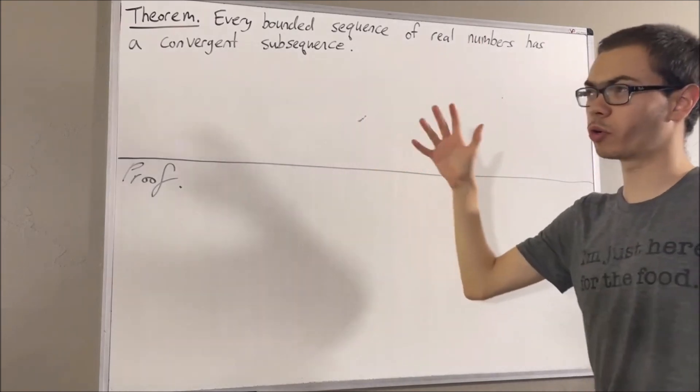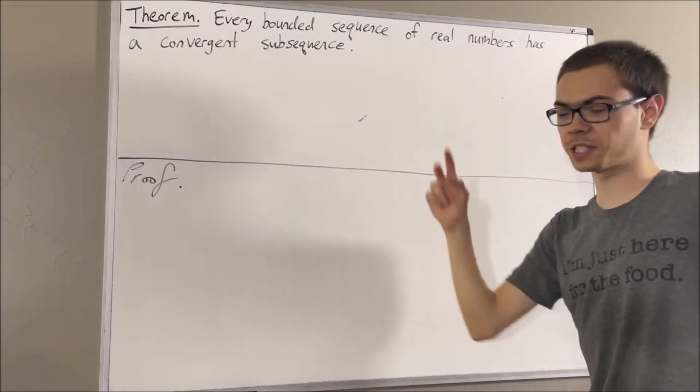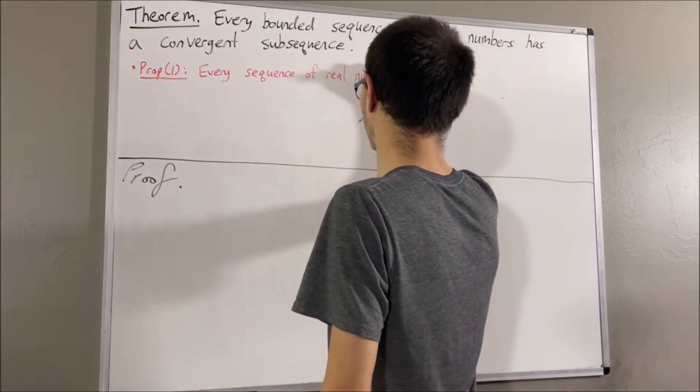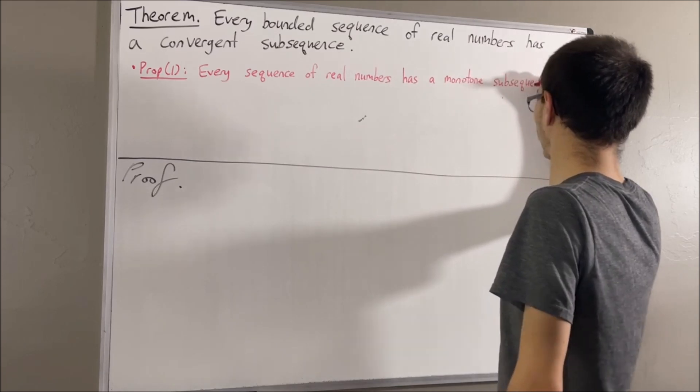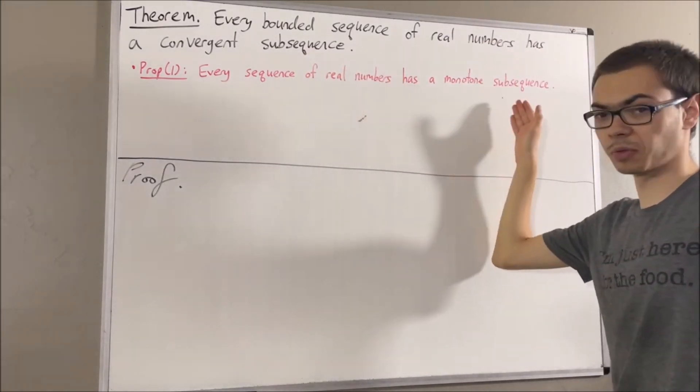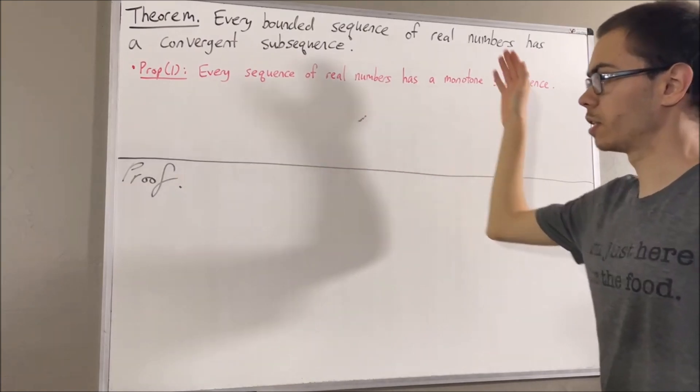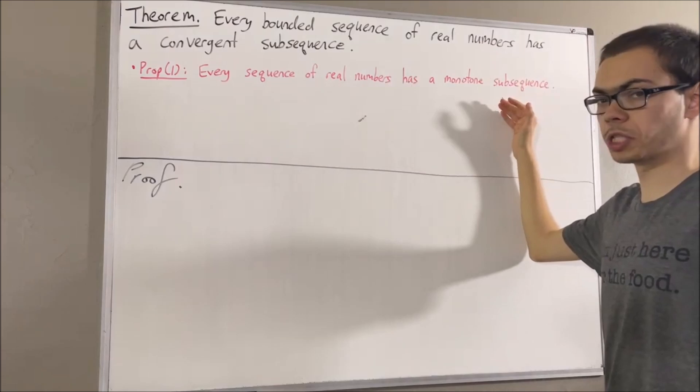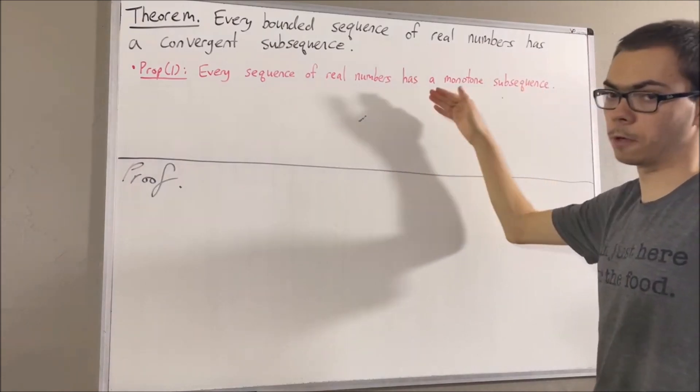In proving this theorem, we're going to use two preliminary results. Here's the first one. Every sequence of real numbers has a monotone subsequence. In other words, every sequence of real numbers has a subsequence which is either increasing or decreasing.